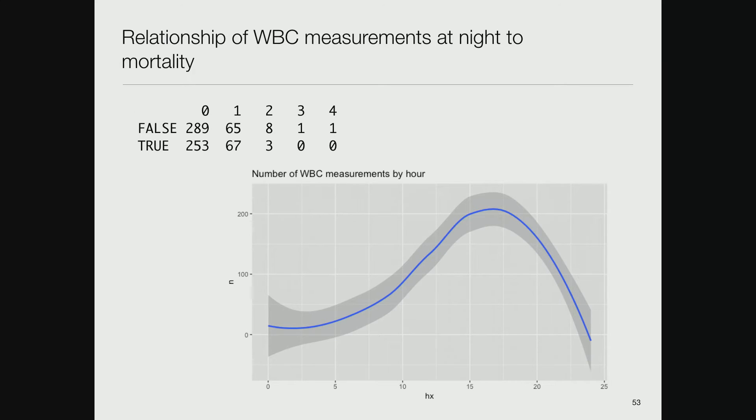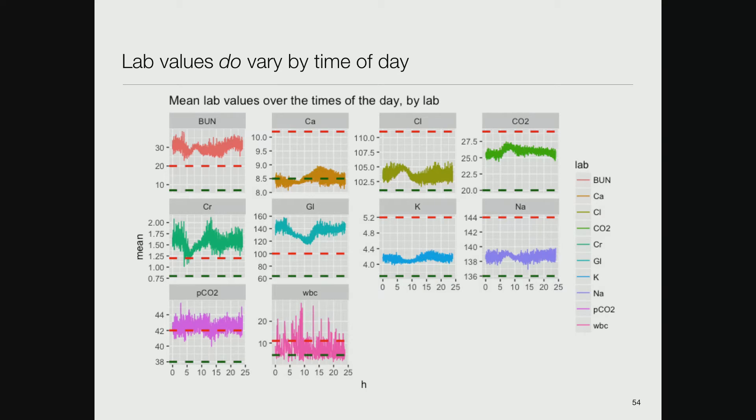Can we build a simple model that predicts who's going to die in the hospital? For each of the hours 0 to 24, what is the number of measurements and for each hour what is the fraction that's abnormal? I threw it into a logistic regression model.